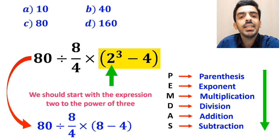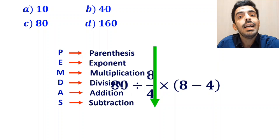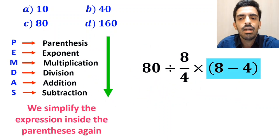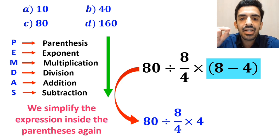So instead of this expression we can write 80 divided by 8 over 4 times 8 minus 4 inside the parentheses. The next step, we simplify the expression inside the parentheses again and instead of this expression we can write 80 divided by 8 over 4 times 4.